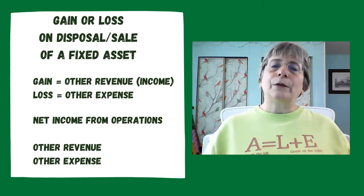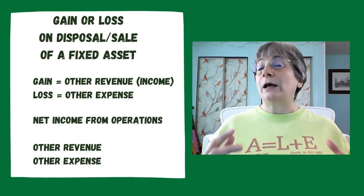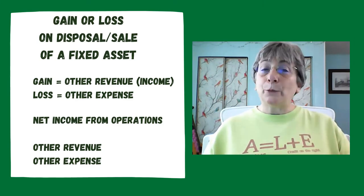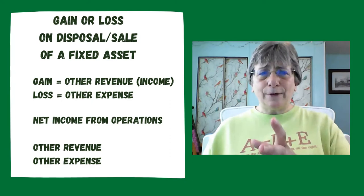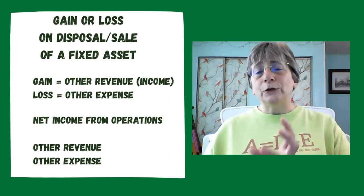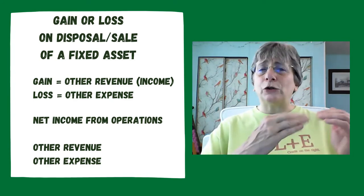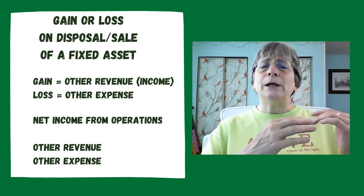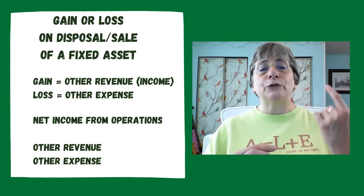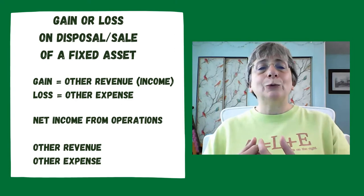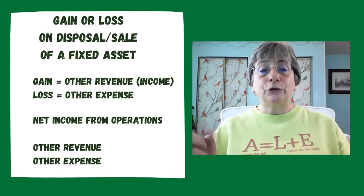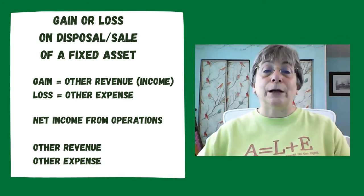When talking about the gain or loss on sale of an asset, we need to look at net book value at the time of the sale. Net book value is cost — what we paid for this asset — minus accumulated depreciation, meaning all of the adjusting journal entries that have impacted that particular asset. Our net book value is our cost minus our accumulated depreciation at the point that we sell the asset.